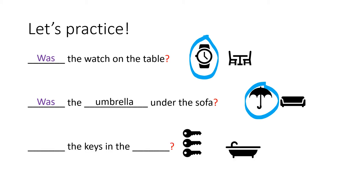And the last one. The keys in the hmm. Well, let's see. We know keys is plural. We have three keys. So is it going to be was or were? Were. Very good. Were the keys in the bath. All right. Good.